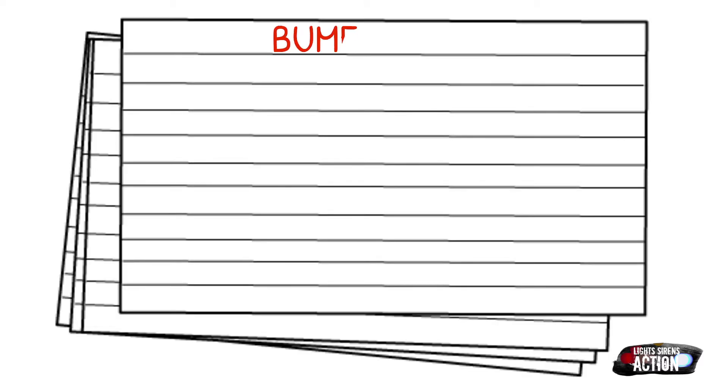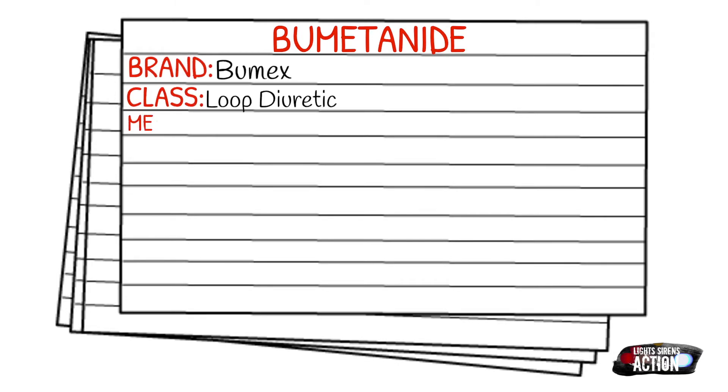Today's medication is called Bumetanide, also known by its brand name Bumex. Before we get too far into this medication, I just want to let you guys know this is not a medication that you see typically given out in the 911 EMS setting. It's definitely more of an in-hospital medication, but it is still in the paramedic national scope of practice, so we're just going to touch on it today.